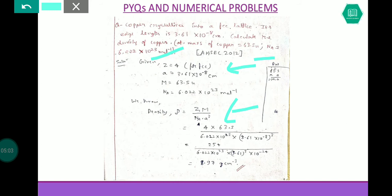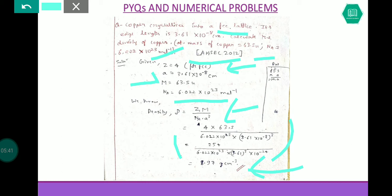Since the lattice is FCC, z = 4. The edge length is 3.61×10⁻⁸ cm — since it is already given in centimeters, no conversion is needed. Molar mass is 63.5 atomic units and Avogadro's number you know well. Just put the values and you will get the answer. This question appeared in the Assam board 2012, so chances of repetition are always there.